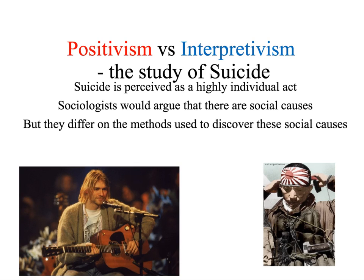In today's lecture, we're going to be looking at the positivism and interpretivism debate when it comes to researching society, and we're going to focus on the study of suicide. When you think about suicide, which is a highly sensitive subject, most of us perceive it as a very individual act — to choose to take one's own life. However, sociologists have argued that there are actually social causes to suicide, and it's quite easy to spot patterns of suicide on a global scale. Sociologists differ on the methods they would use to discover these social causes, and we are going to examine both the positivist and interpretivist approaches to the study of suicide.